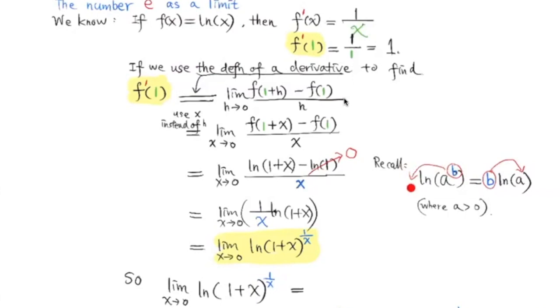We can also reverse the process here and bring this b up here and make it the exponent on a. And that's what we are going to do here. We are going to bring this 1 over x up here and make it the exponent of 1 plus x.